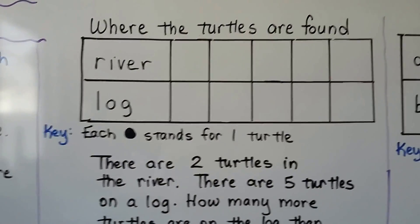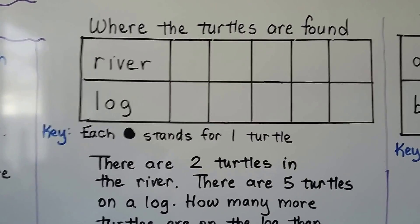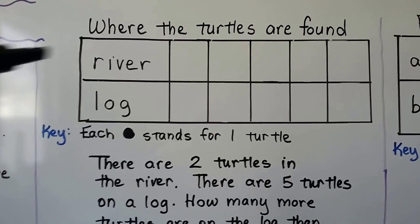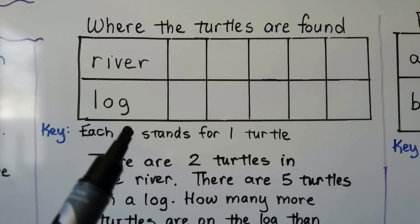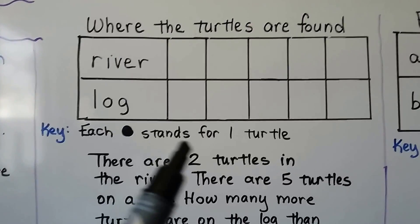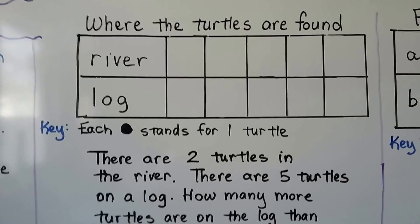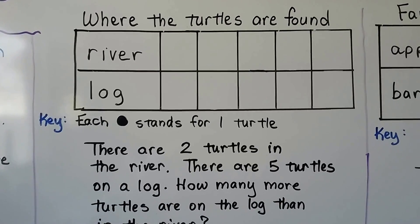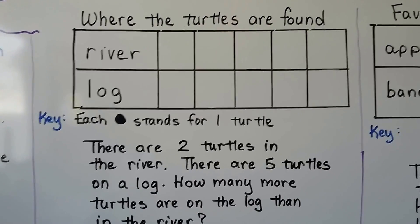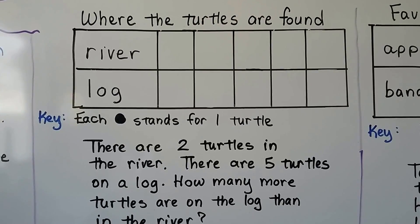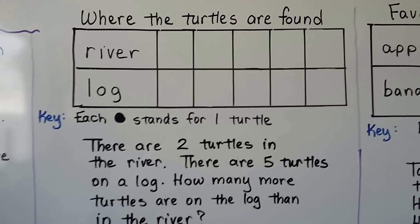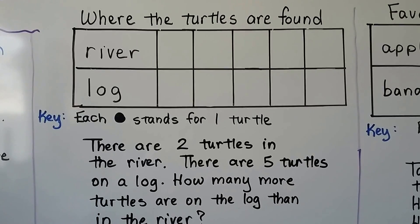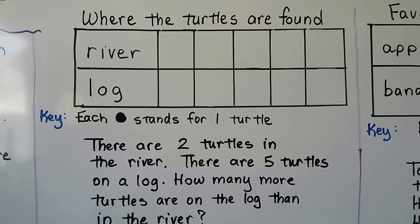Let's try this one. Where are the turtles found? Our choices are river or log, and the key says that each black dot stands for one turtle. There are two turtles in the river. There are five turtles on a log. How many more turtles are on the log than in the river?